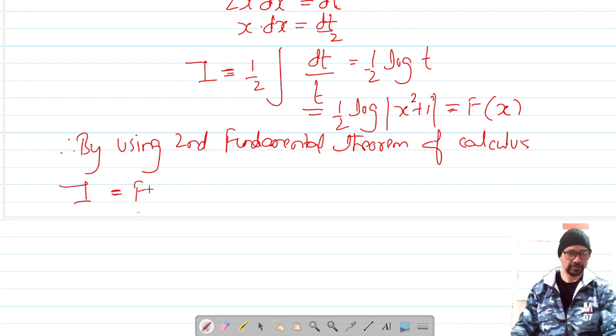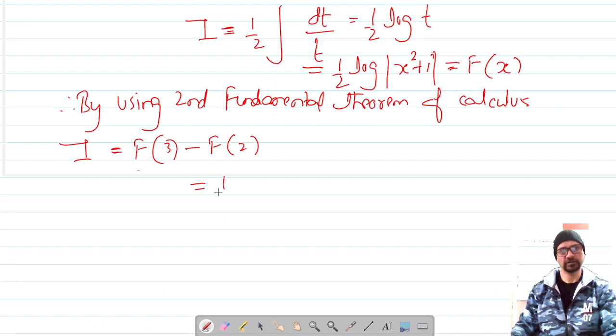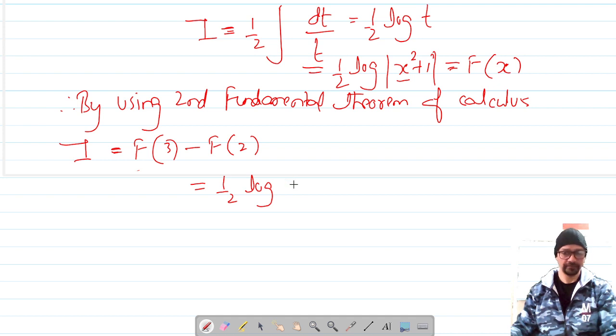our integral is the value of the function at 3 minus the value of the function at 2. So this is half log of, for 3, three squared plus 1 is 10, minus